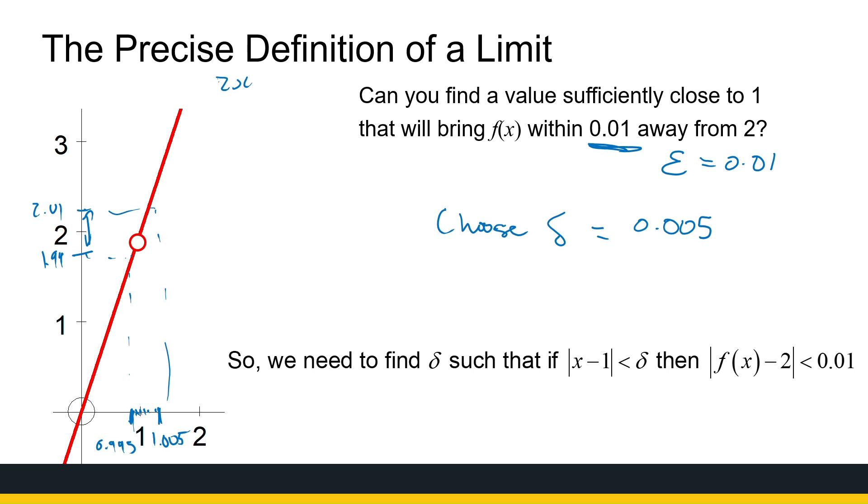We can continue. I can keep choosing epsilon values that are closer and closer to 0. As long as epsilon, that's the guiding rule - as long as epsilon is greater than 0, it can be 0.000001. I will be able to find a delta that gives me a range how far away I can move from 1 to get close enough, to get that close, epsilon close, to 2. That's how the precise definition works.